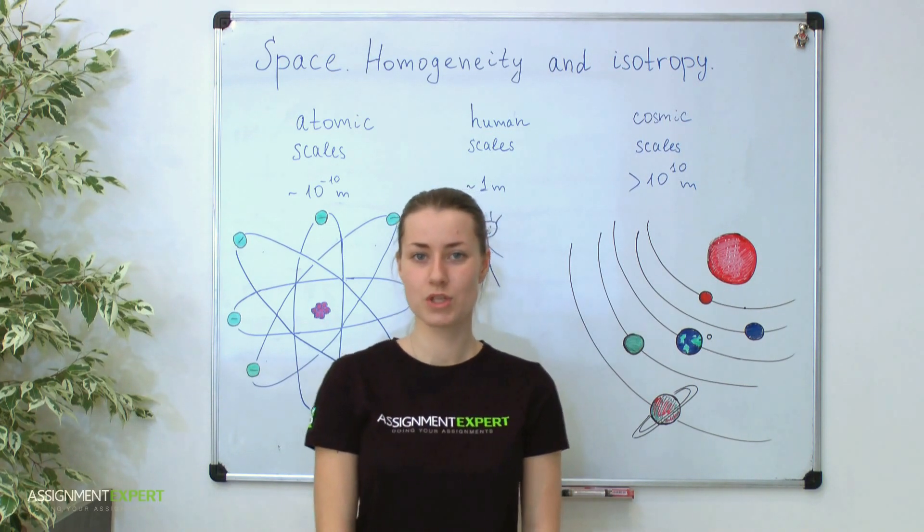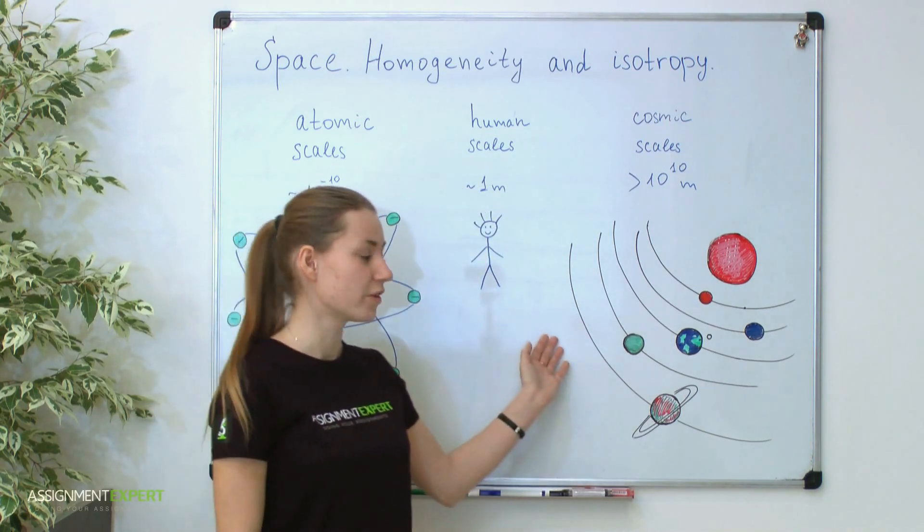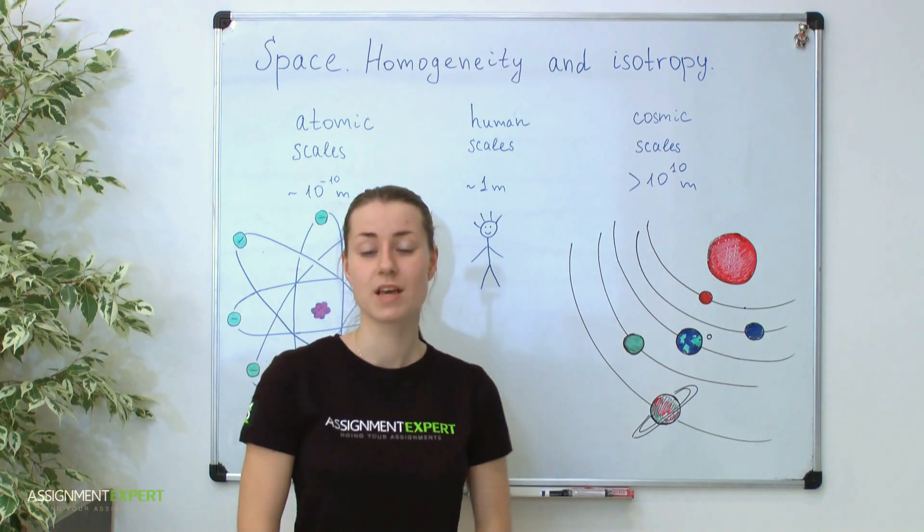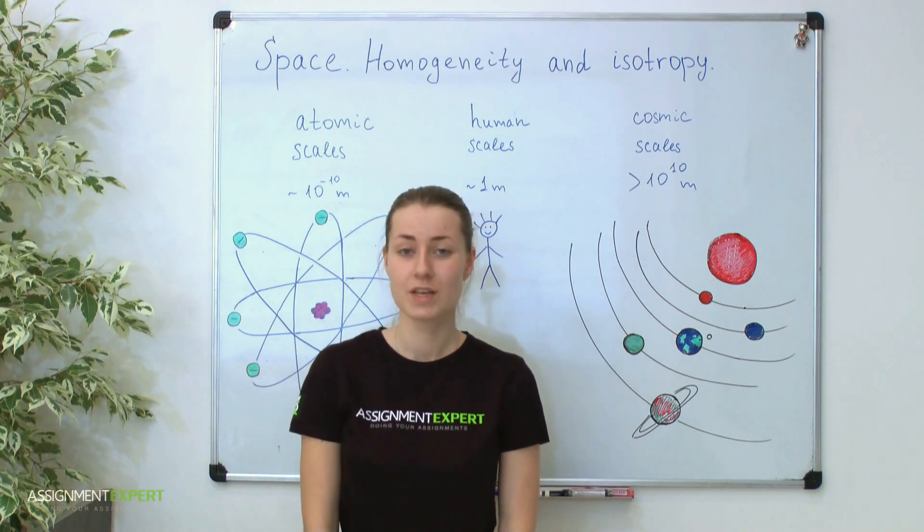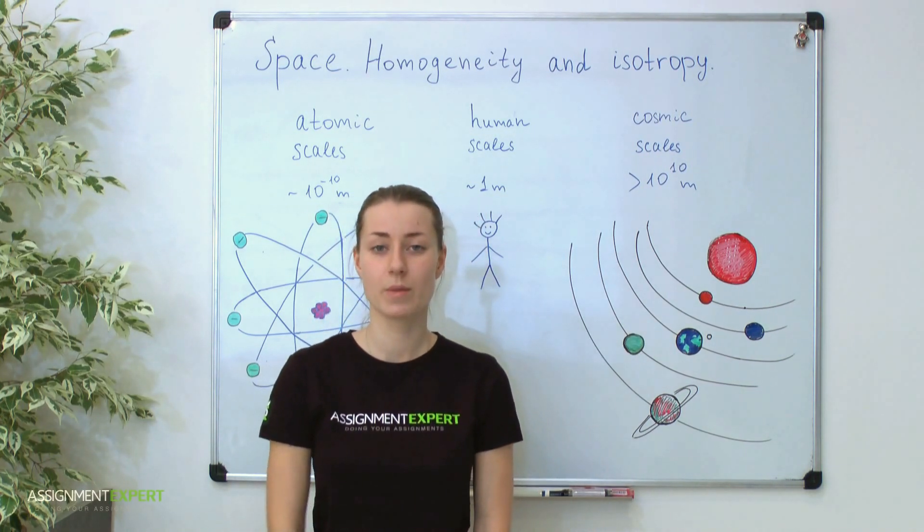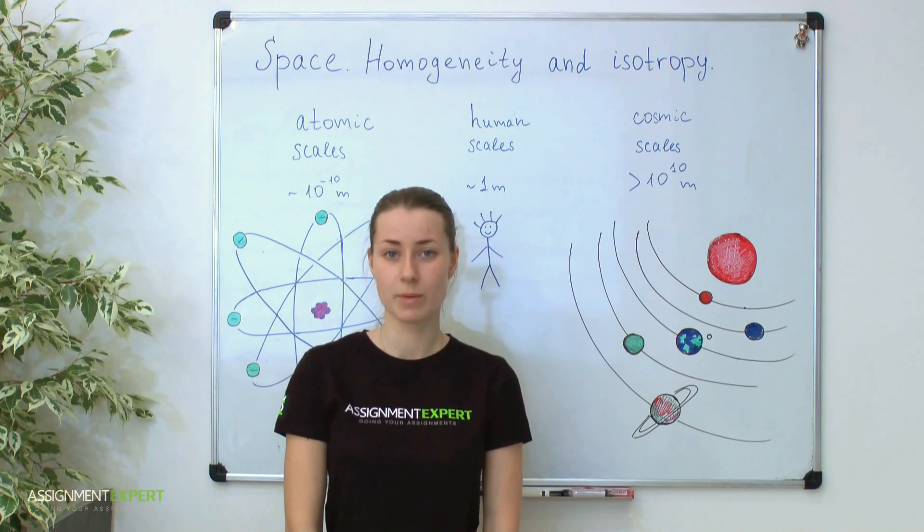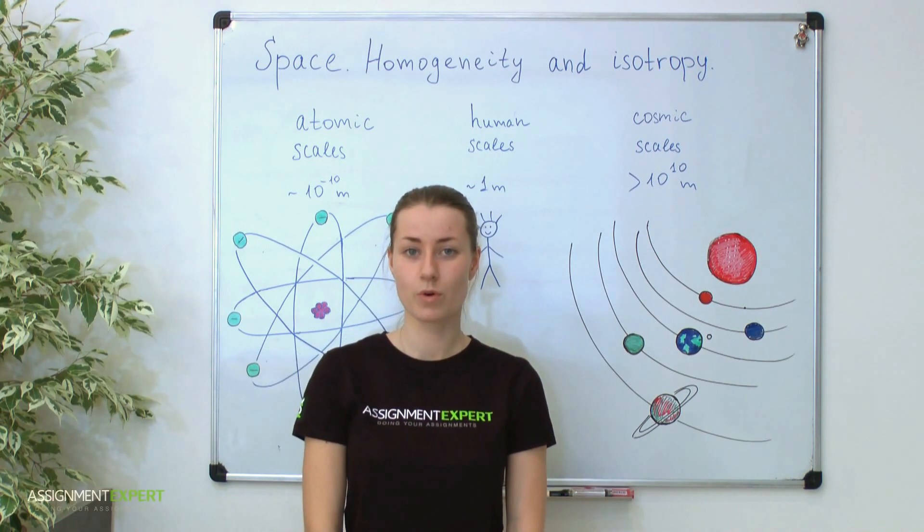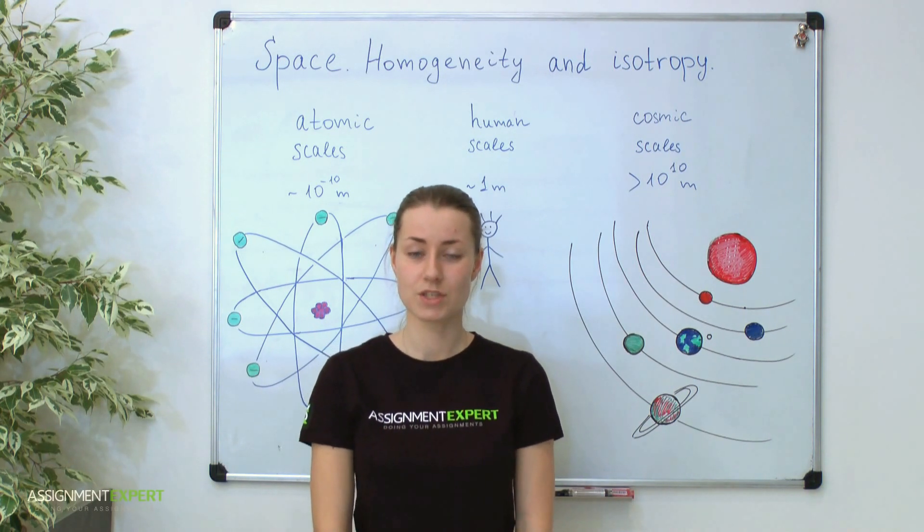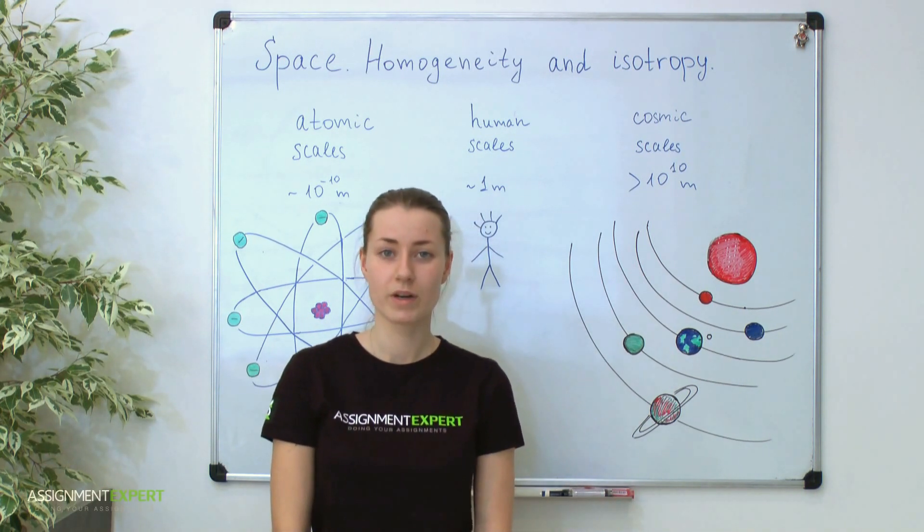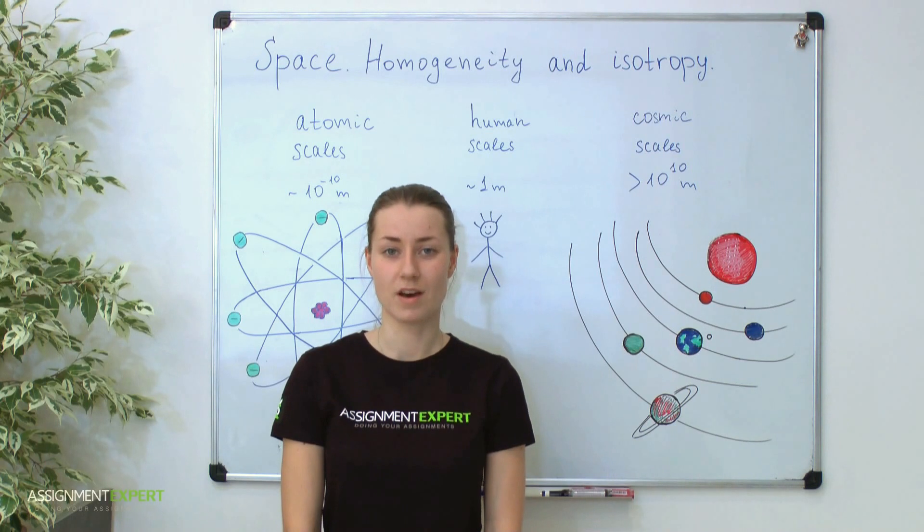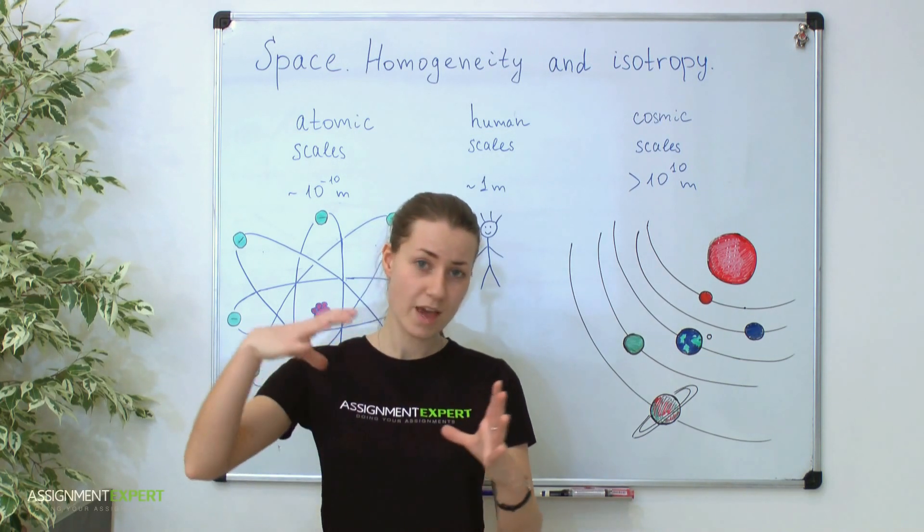In most physical problems which deal with scales as human and larger, it's convenient to assume our space homogeneous and isotropic. Such property of space may be explained with good accuracy in terms of Big Bang theory. According to it, our universe was born in a Big Bang and after started to expand. Moreover, it continues its expansion even now. Our universe grows with every second.